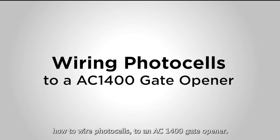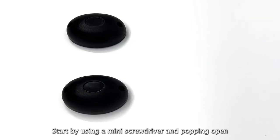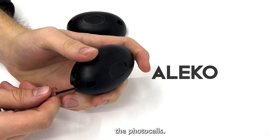Today we're going to be showing you how to wire photocells to an AC1400 gate opener. Start by using a mini screwdriver and popping open the photocells.